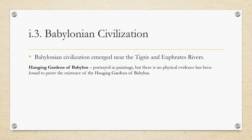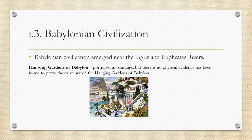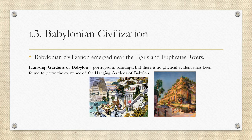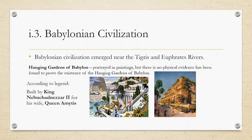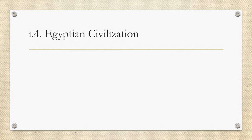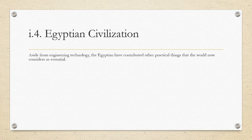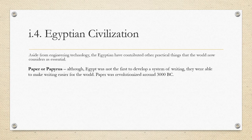There are paintings that show the Hanging Gardens as beautiful. The Hanging Gardens of Babylon were built by King Nebuchadnezzar II for his wife, Queen Amytis. Next is the Egyptian civilization. Aside from engineering technology, the Egyptians contributed other practical things that we would now consider essential. Their greatest discoveries and inventions are particularly notable.